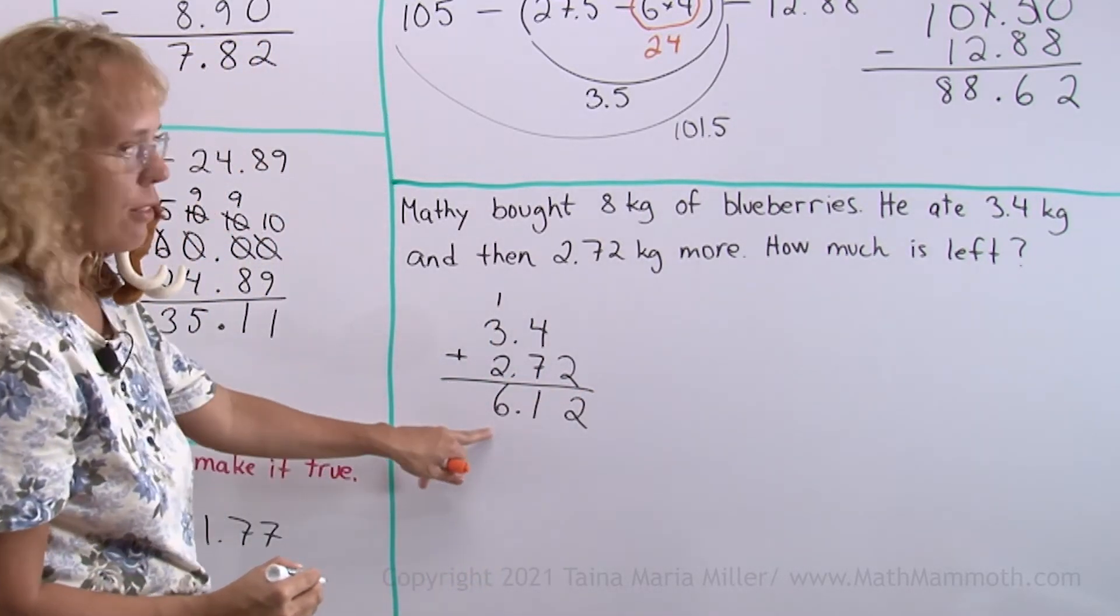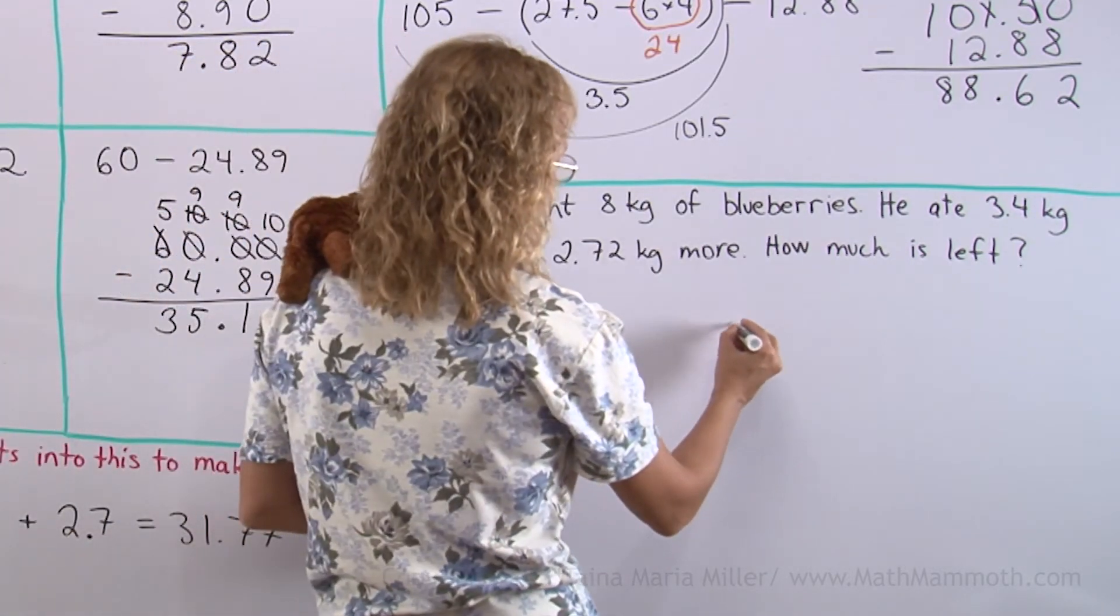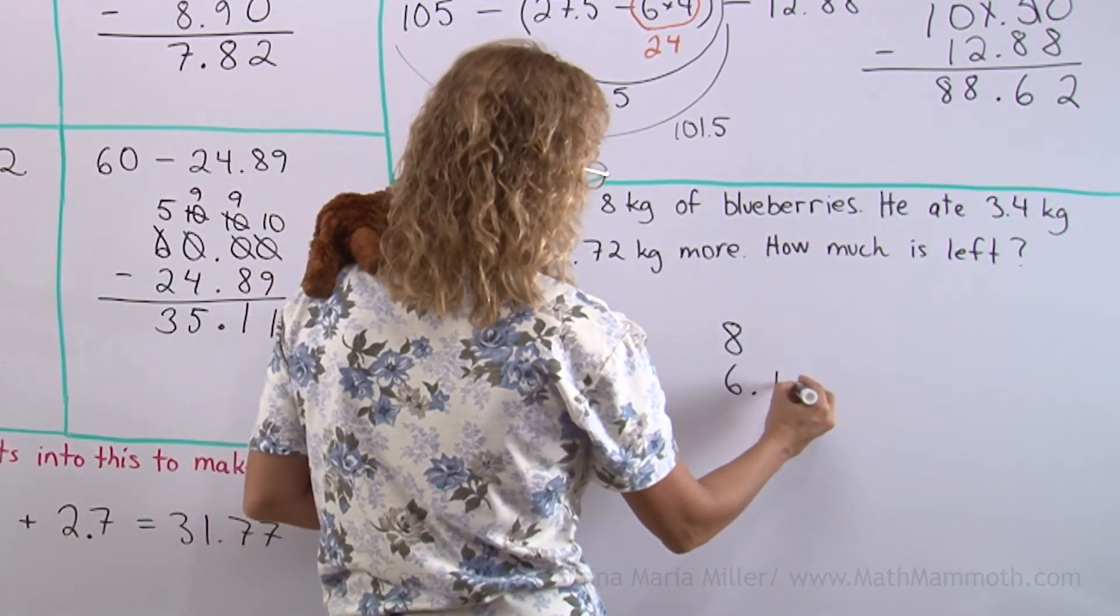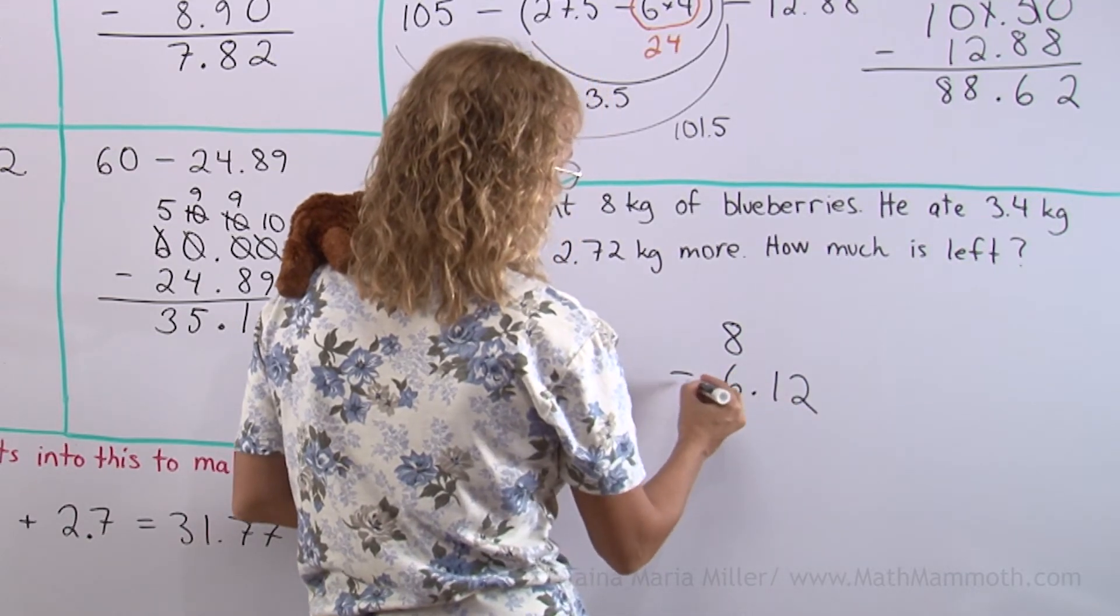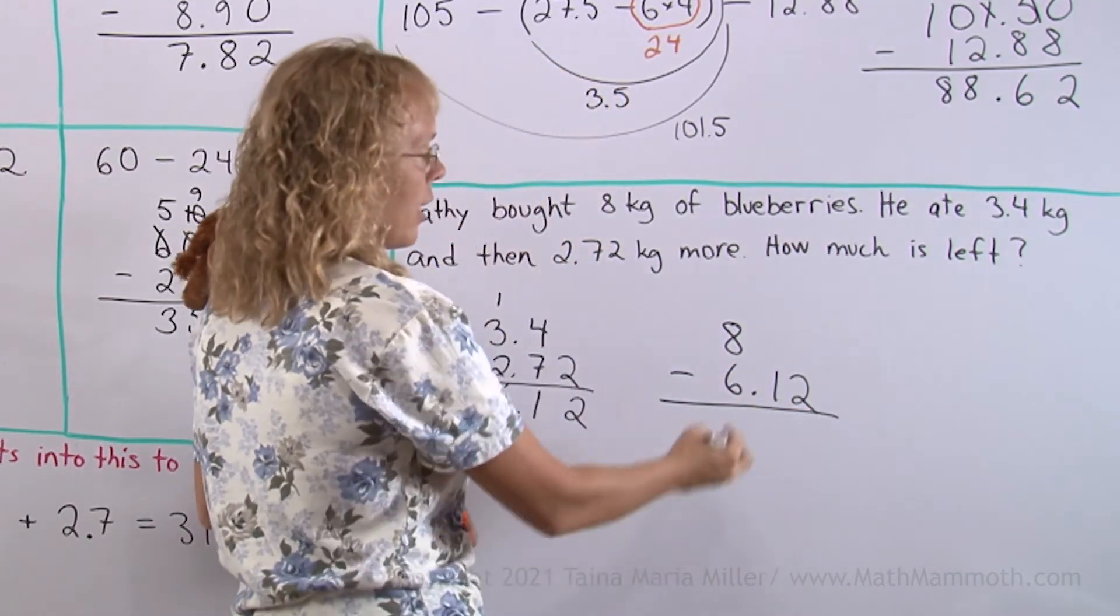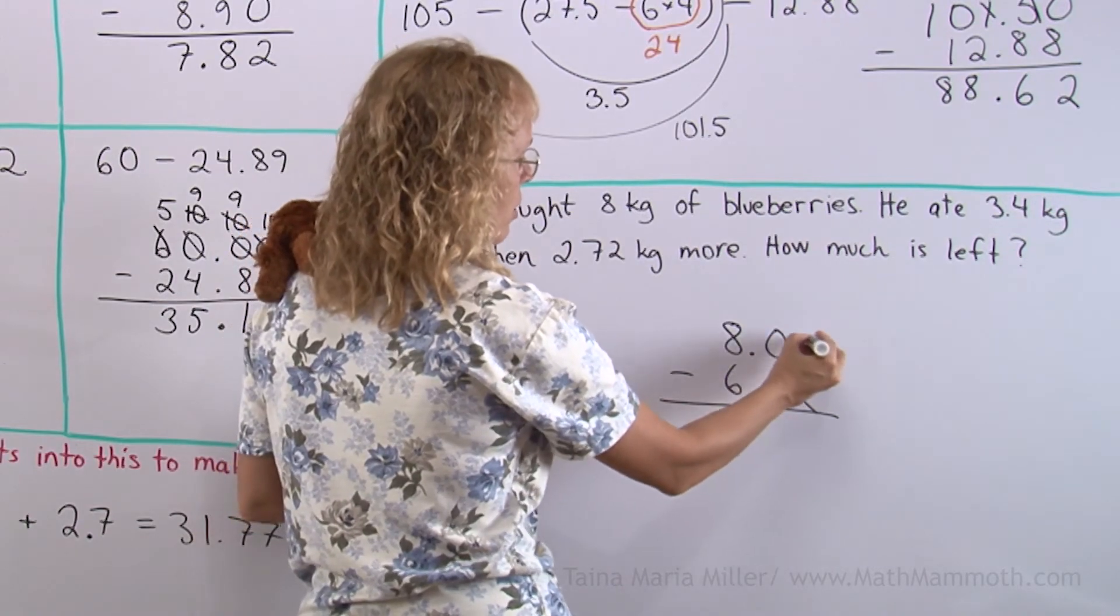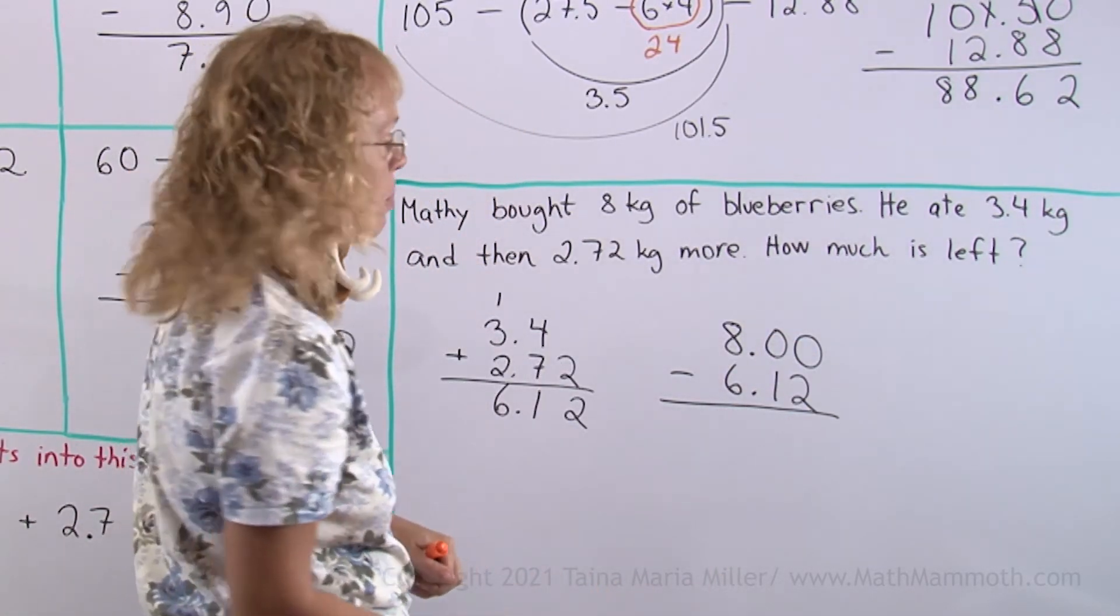And now we subtract from 8 kilograms that. 8 minus 6.12. I need to put the decimal point here for the 8 and zeros.